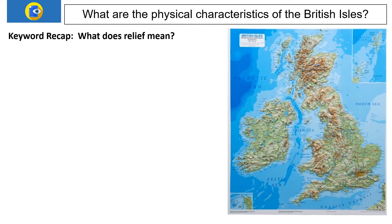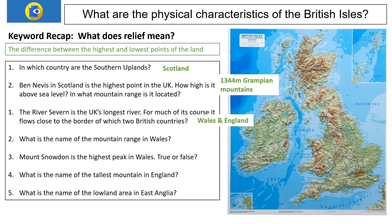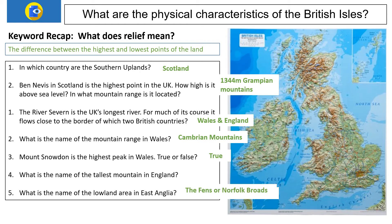Let's go through the answers. The Southern Uplands are found in Scotland. Ben Nevis is located in the Grampians and is 1,344 metres high. The River Severn flows close to the border of England and Wales. The mountain range in Wales is the Cambrian Mountains — Mount Plynlimon is the source of the River Severn. Mount Snowdon is the highest peak in Wales, which is true. The tallest mountain in England is Scafell Pike at 978 metres. The lowland area in East Anglia is the Fens or the Norfolk Broads.